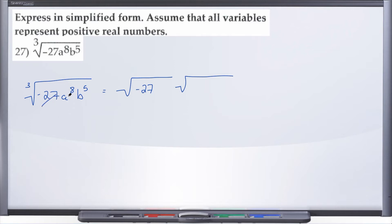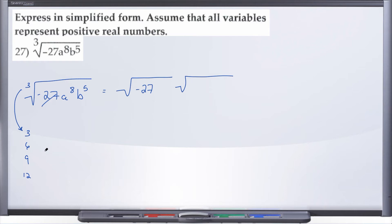We've dealt with the negative 27, so let's take a look at a to the eighth. When you've dealt with your number and moved on to your variables, you look at the exponents of those variables and go back to your index. Whatever your index or root is, start thinking in multiples of that number. Here the index is 3, so think in multiples of 3: 3, 6, 9, 12, and so on. Is 8 a multiple of 3? No — 8 doesn't appear in that list, so 8 is not a multiple of 3.